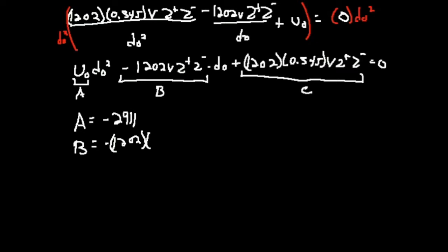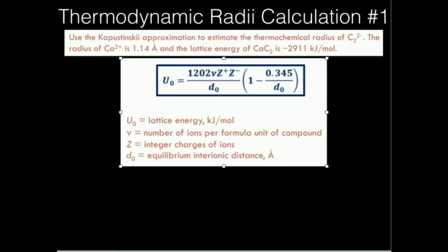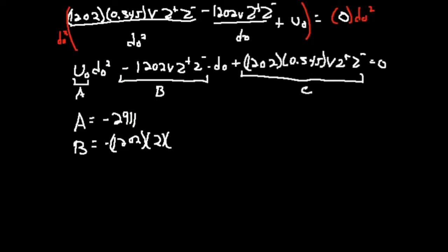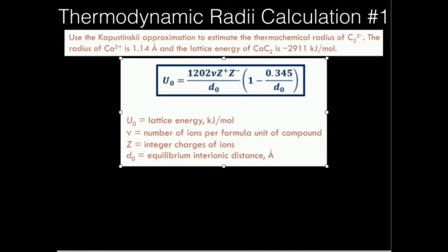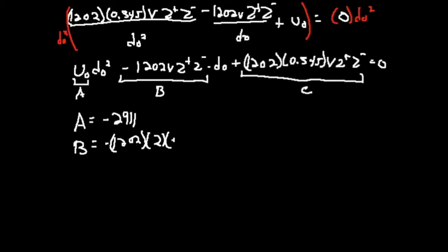My B is going to be negative 1202 times, what is V for this? V is the number of ions per unit formula. This is just CaC2, but be careful. C2 is one ion. Calcium is one, so that's just two. The charge, the plus charge is going to be plus two, and the minus charge is going to be minus two. So this is going to be plus two times minus two, and that's going to be my B. My C is my constant term. It's going to be 1202 times 0.345 times V with two ions per unit compound. The charges are the same, plus two minus two, and I need to figure out what that is.